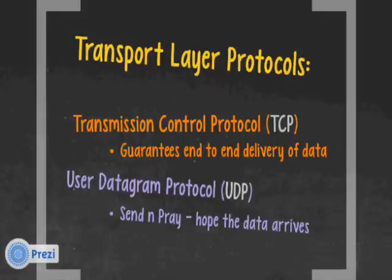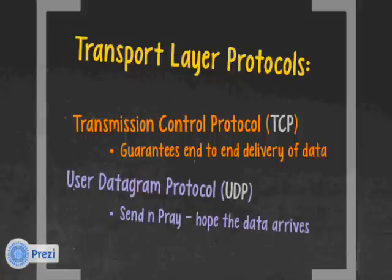There's another protocol on the transport layer called User Datagram Protocol, UDP. We call it 'send and pray' — hope the data arrives. We also call it connectionless because it doesn't care if the destination is there; it just kicks the data out the door. It relies on upper-layer application protocols to do error checking. It's a quick and dirty protocol without the overhead of TCP, and we don't need that overhead now because most of our networks are digital and extremely reliable.